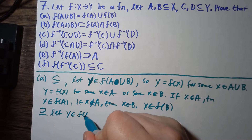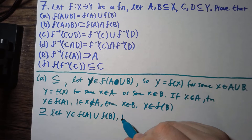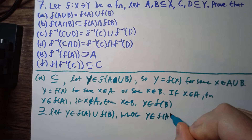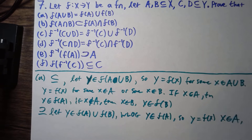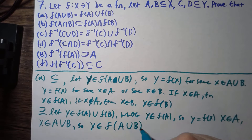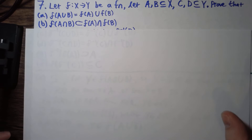Now for the other inclusion, say we have y in f of A union f of B. Without loss of generality, assume y is in f of A. So y is f of x for some x in A. But that means x will also be in A union B, because A is a subset of A union B. And so that means y will just be in the image of A union B as well. We have both subset equations, so we have equality.